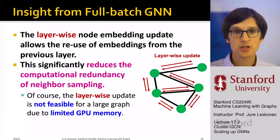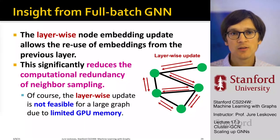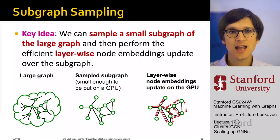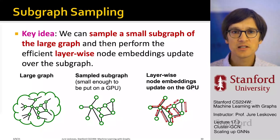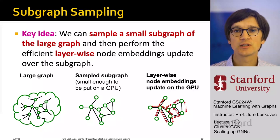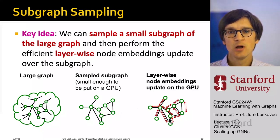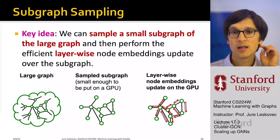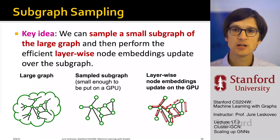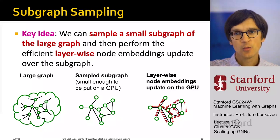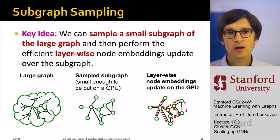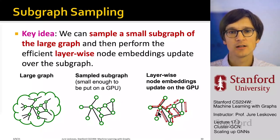The problem is that layer-wise update is not feasible for the entire graph at once because of GPU memory. So the idea of Cluster GCN is: can we sample the entire graph into small subparts and then perform full-batch implementation on those subgraphs? I take the large graph, sample a subgraph that fits in the GPU, and then apply a full-batch implementation on that sampled subgraph. The difference from neighborhood sampling is that there we compute the computation graph for each individual node, while here we sample an entire subgraph and perform GNN on that subgraph.